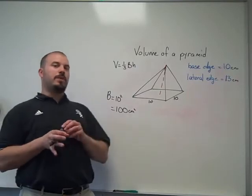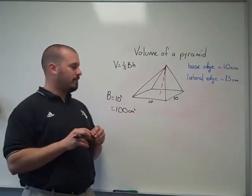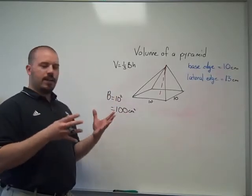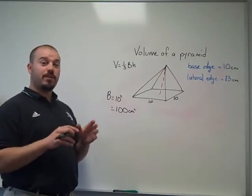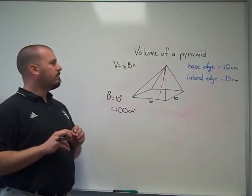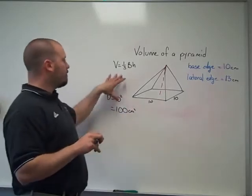If the base were pentagonal or hexagonal, then you would find the area of that base the same way you would find the area of any regular polygon, dividing it into triangles and then multiplying through by the number of triangles once you find the area of one of them. But there's a video on finding the area of regular polygons online that you can check for that. Okay, so we've got our base area.